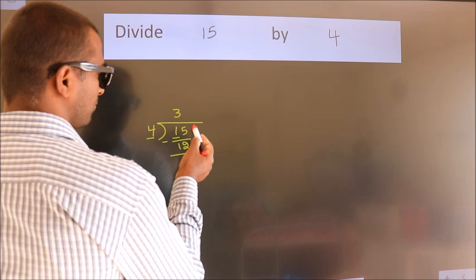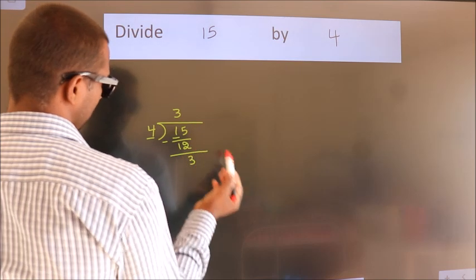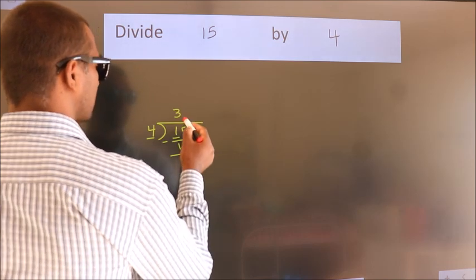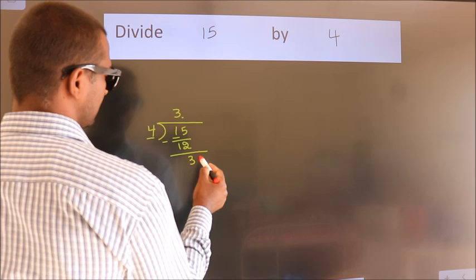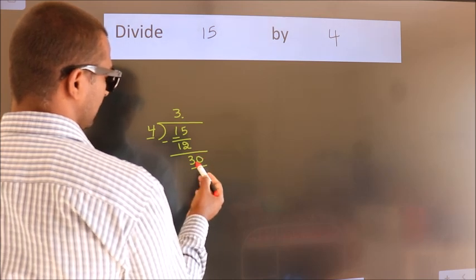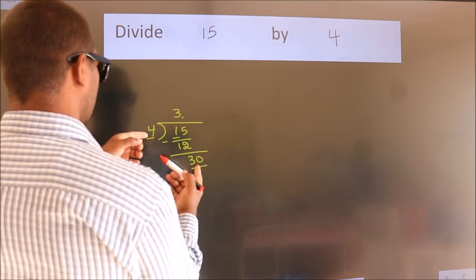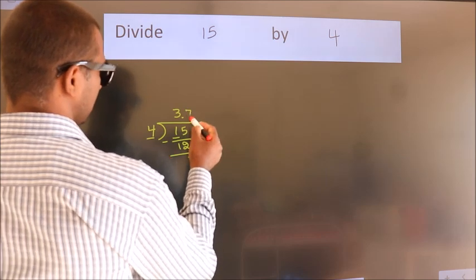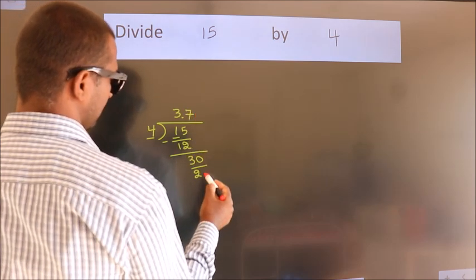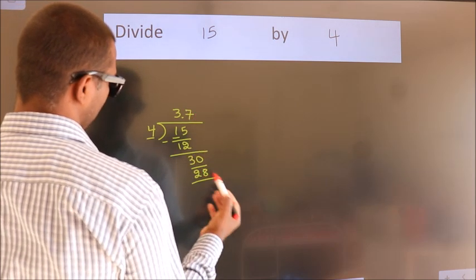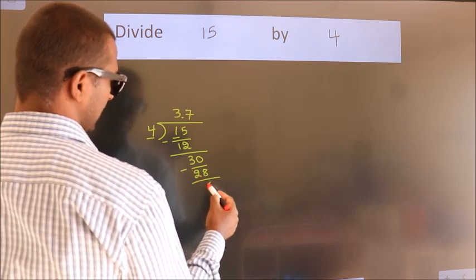After this, no more numbers to bring down. So what we do is put a dot and take 0. So 30. A number close to 30 in the 4 table is 4 times 7, which is 28. Now we subtract and we get 2.